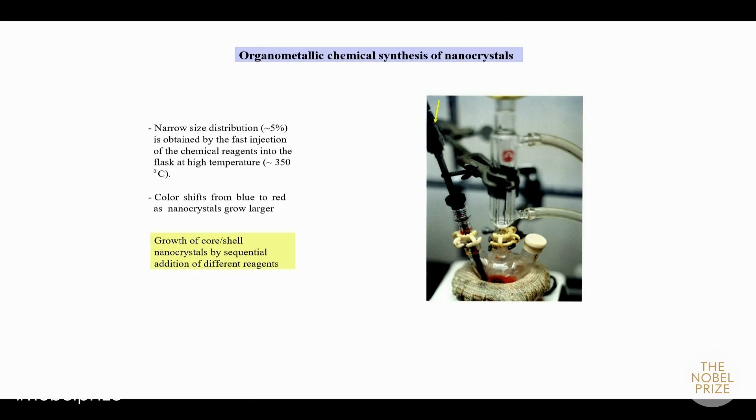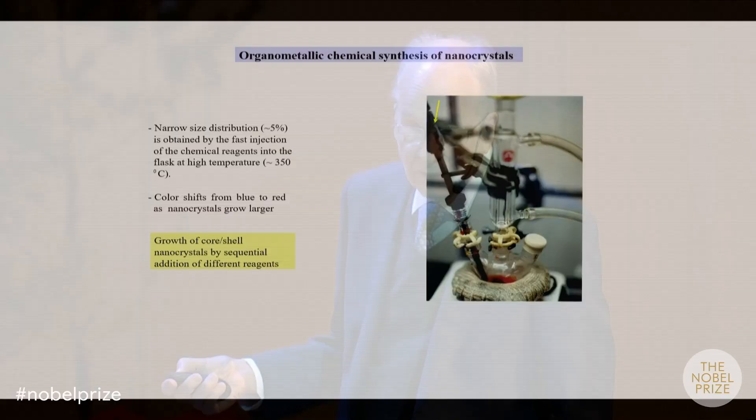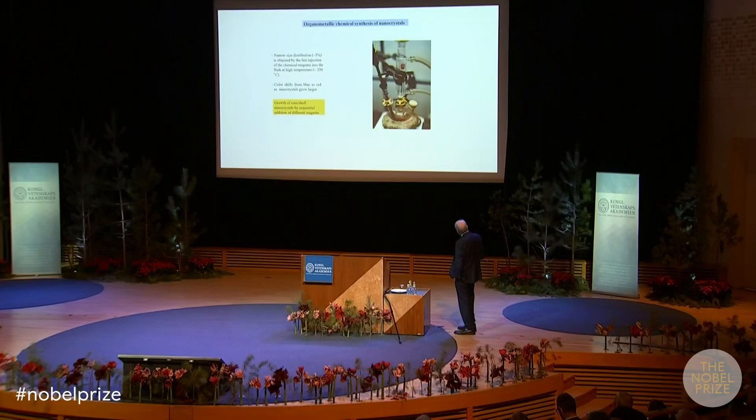This offers the opportunity to control the composition as a function of size. You can begin to grow one type of nanocrystal and then halfway through the growth inject reagents through the septum to grow another nanocrystal, getting core-shell nanocrystals.